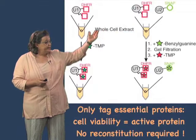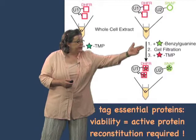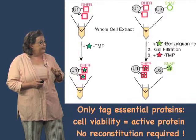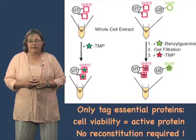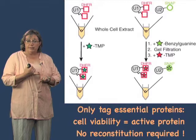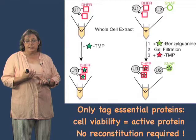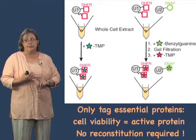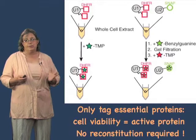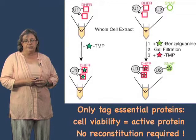We take those extracts and add TMP to label the DHFR, or we take our benzyl guanine with a fluorescent tag, react that with the whole cell extract, remove the excess dye by gel filtration, and then add our TMP. The great thing about this system is that we know the proteins we're tagging are active, because they're the only copy of the protein in the cell, and we are only tagging essential proteins. If the cells grow — and splicing is essential — then that protein must be active. There's absolutely no protein reconstitution required; we're using the endogenous proteins with just a small protein tag added.